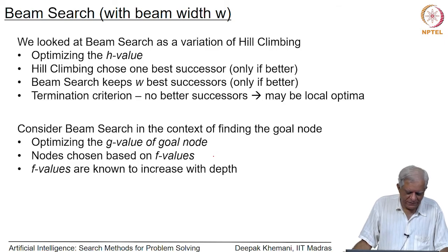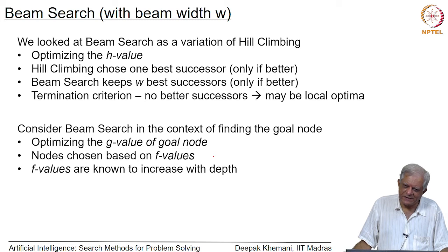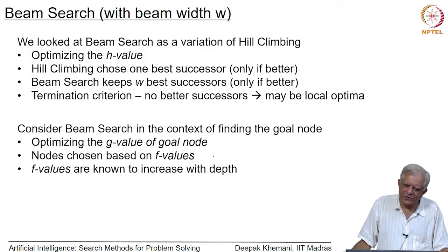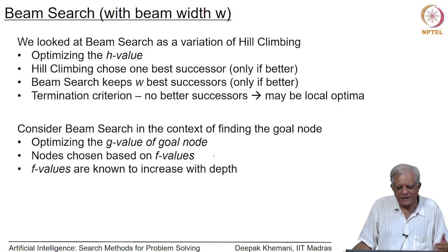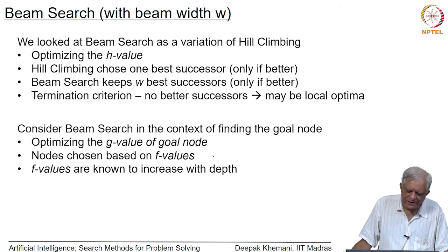We have studied that especially under the monotone condition, f values tend to increase as you get closer to the goal. The reason is that the contribution of h decreases as you go closer to the goal while the contribution of g increases, and h was the one underestimating the cost to the goal. Therefore, g plus h together as a whole increases. Clearly, we cannot use the earlier criterion of moving to a successor only if it is better.